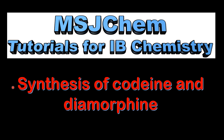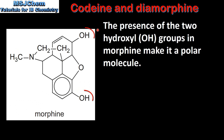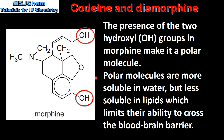This is MSJChem. In this video I'll be looking at the synthesis of codeine and diamorphine. The presence of the two hydroxyl groups in morphine make it a polar molecule. Polar molecules are more soluble in water but less soluble in lipids, which limits their ability to cross the blood-brain barrier.